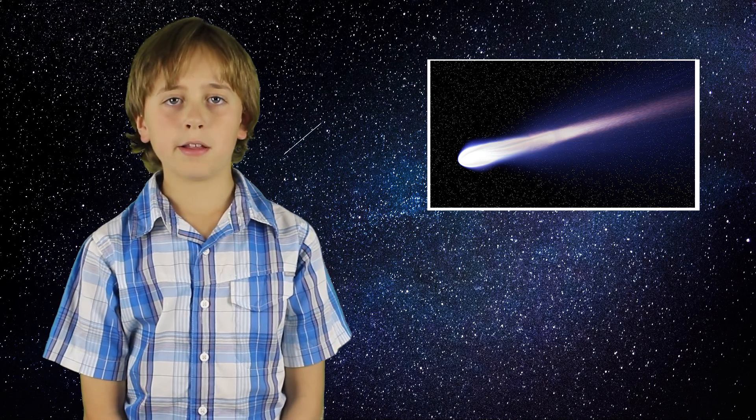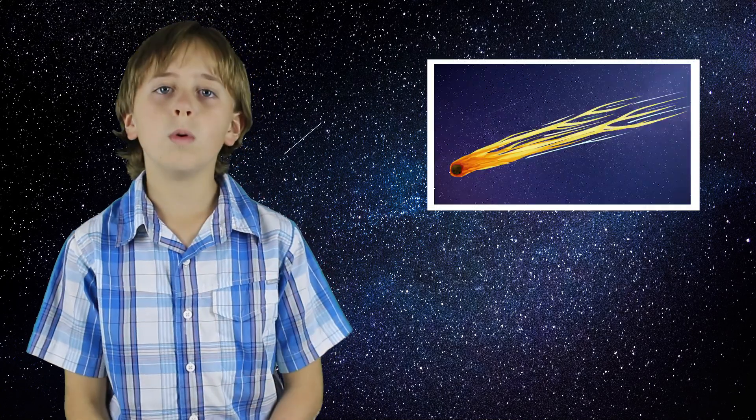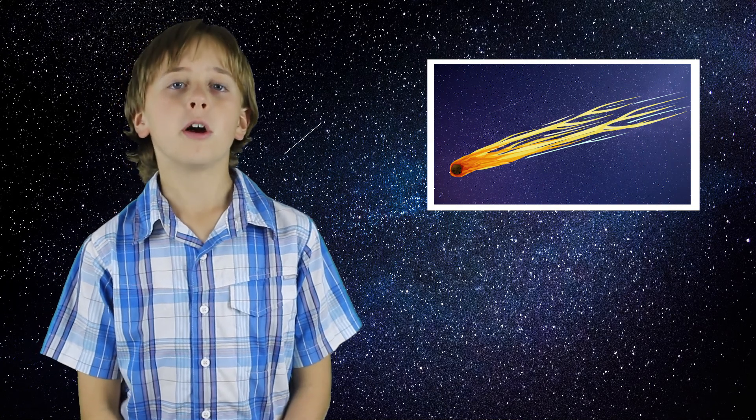The Orionid meteor shower happened because the Earth passed through all the bits of debris that Halley's Comet left behind. When the Earth's atmosphere comes in contact with those pieces, they burn up and create a meteor shower.